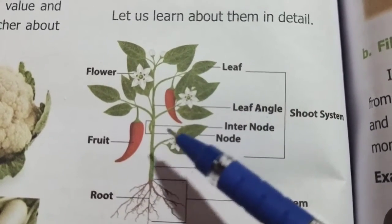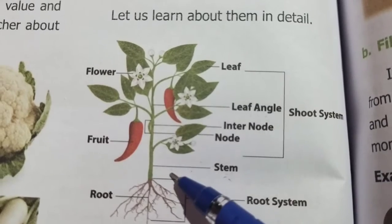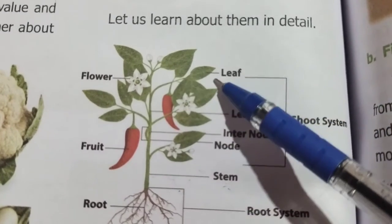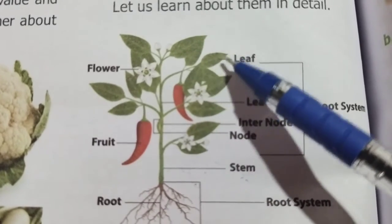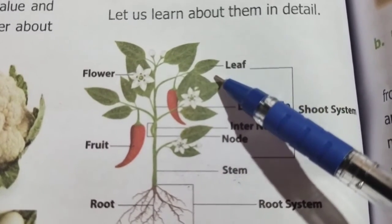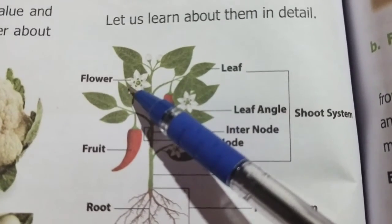So what is the function of stem? The stem supports leaf, flower, and fruit in the plant. Students, the next one is leaf. The leaves are green in color and they are involved in food preparation using sunlight.